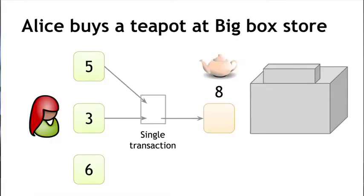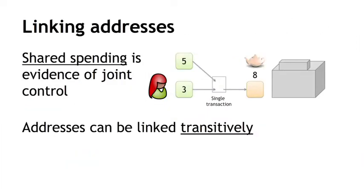This reveals something. For somebody looking at this transaction permanently recorded in the blockchain, they're going to think: two different inputs to this transaction — that could only happen because both of these input addresses are under the control of the same user. They were able to use their wallet software to create a transaction that combined both. In other words, shared spending is evidence of joint control of two different addresses. This is not just about linking two addresses that are inputs to a transaction — you can do it transitively, and every time Alice creates a new transaction combining one of those addresses with a new address, you can add this new address to the cluster.